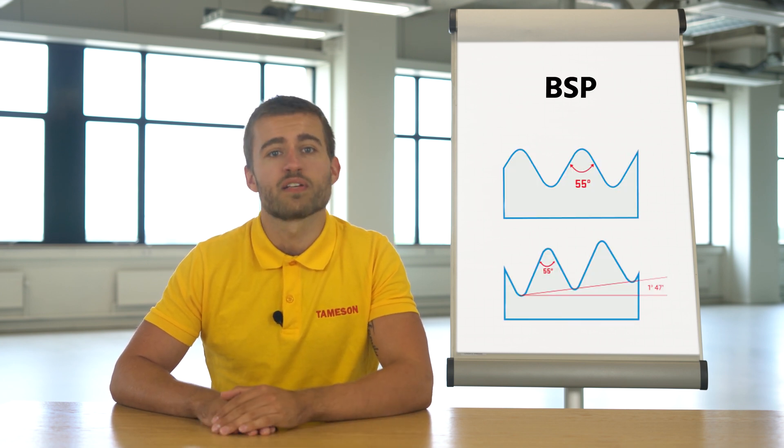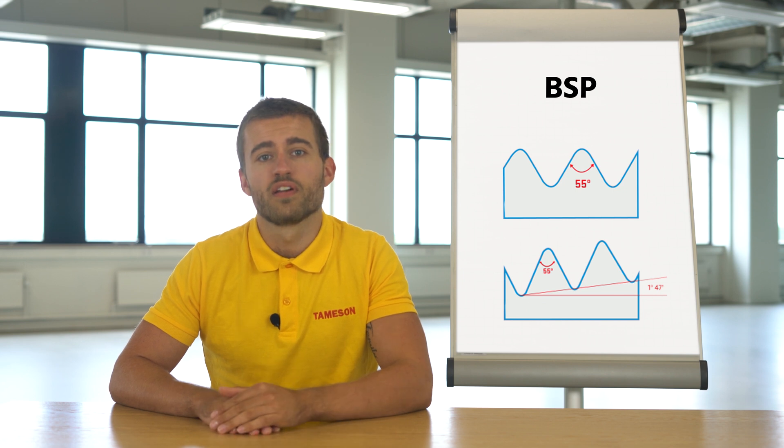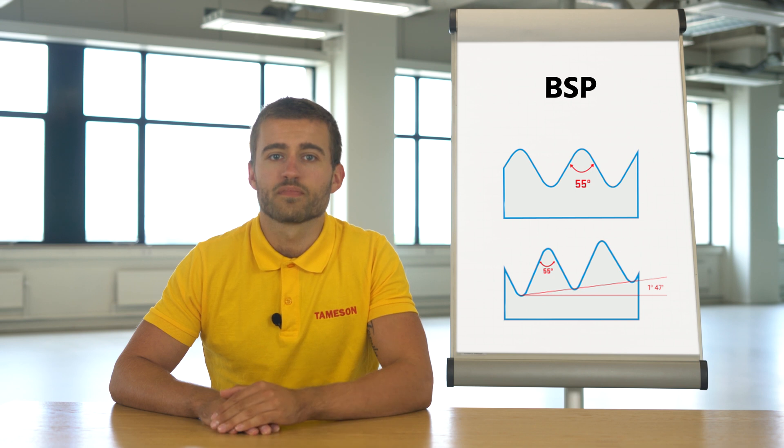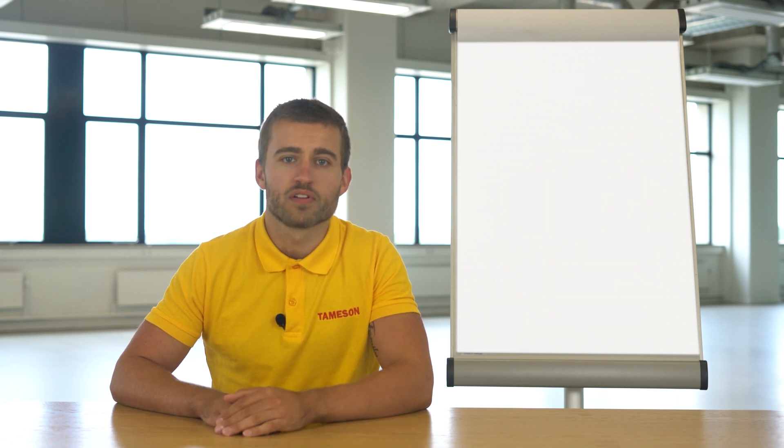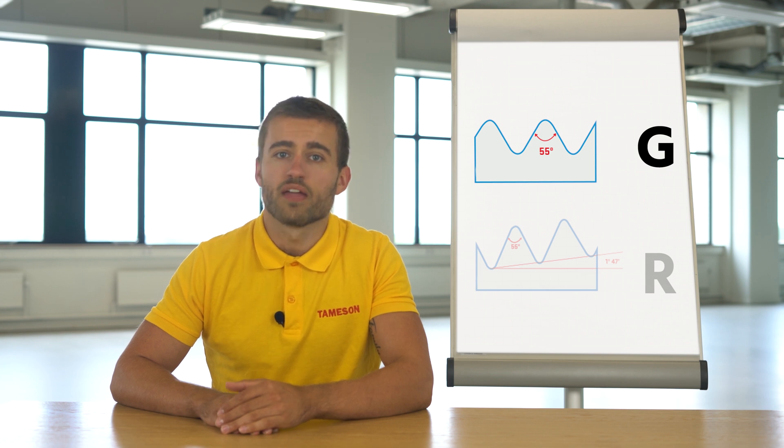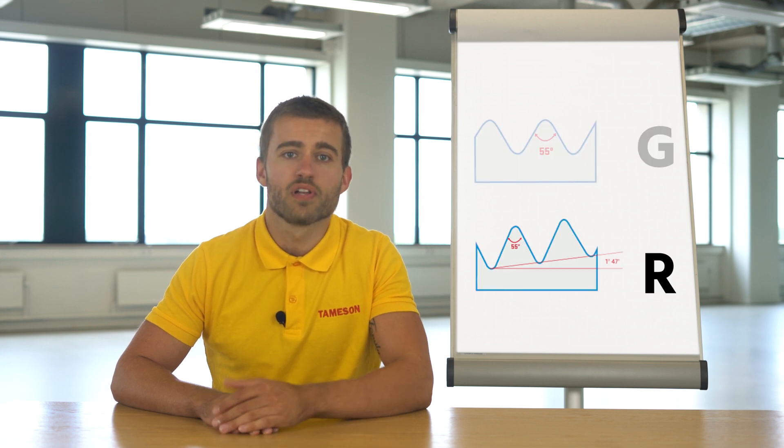The British Standard Pipe has been adopted everywhere except the United States. This thread is based on a 55-degree V-shaped wire with rounded bottom and top. There are two types of BSP threads: the BSPP, which has parallel threads, and the BSPT, which has conical threads. Parallel threads are usually indicated by the letter G, and conical threads with the letter R.